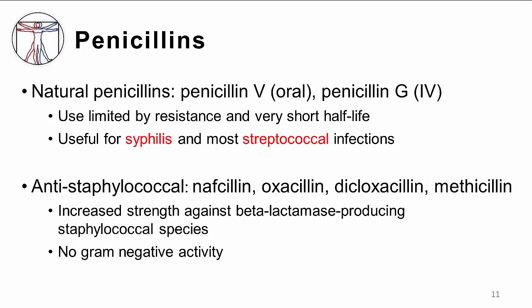However, strep pneumoniae resistance to penicillin has been increasing. Due to the development of resistance in the form of beta-lactamases, the basic structure of penicillin was modified to resist these destructive enzymes, leading to what is known as the anti-staphylococcal penicillins, because staphylococci are known to carry beta-lactamases. This modification gave these drugs activity against staphylococci. However, penicillin still lacked activity against gram-negative infections.